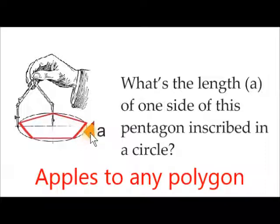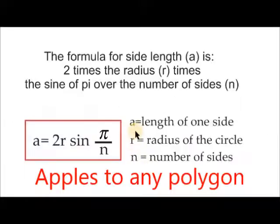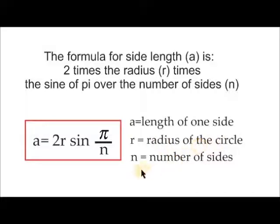What is the length A of one side of this pentagon inscribed in a circle? Where A equals the length of one side, R equals the radius of the circle, and N equals the number of sides.